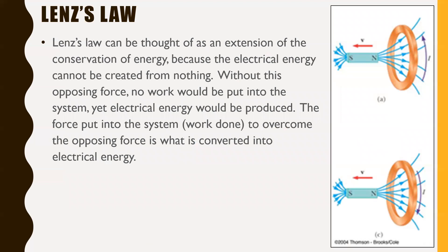Lenz's law can be thought of as an extension of the conservation of energy, because electrical energy cannot be created from nothing. Without this opposing force, no work would be put into the system yet electrical energy would be produced. We have to have these opposing forces — there has to be something opposing what you're doing for you to overcome it. That work — that change in energy — is converted into electrical energy. The force put in to overcome the opposing force is what is converted into electrical energy; that is the source of the energy that drives the current.